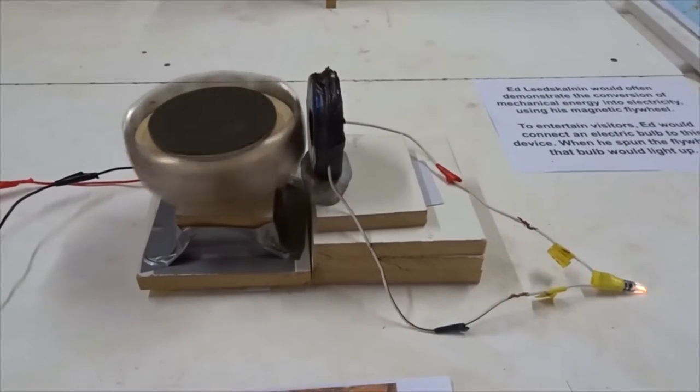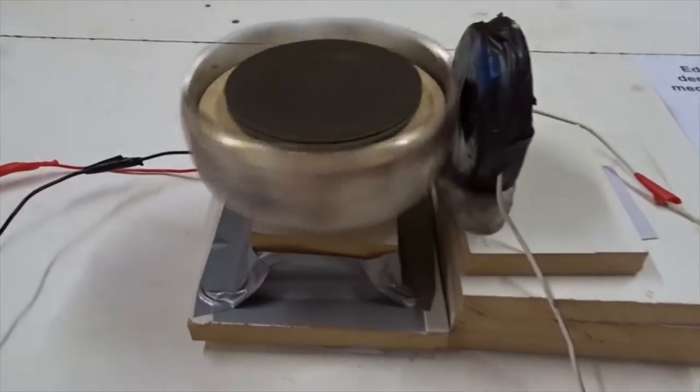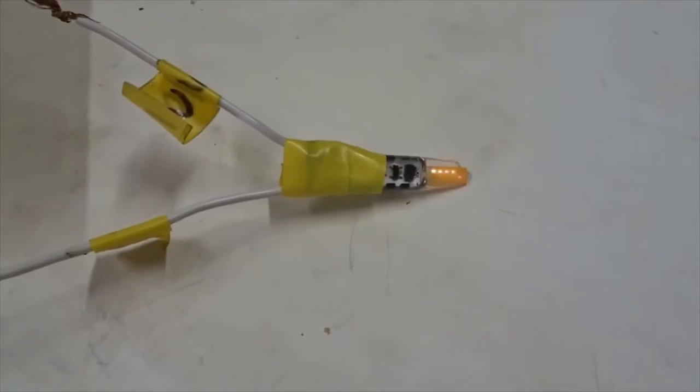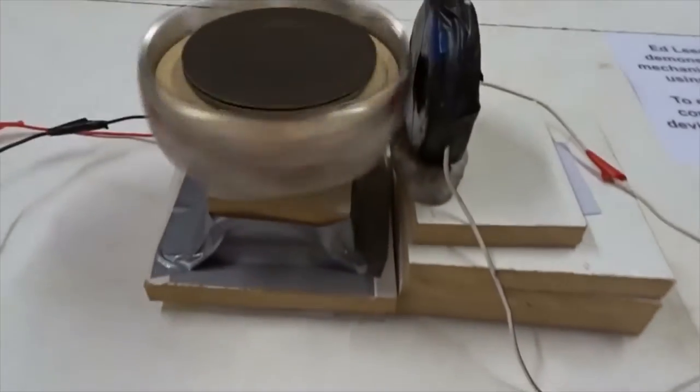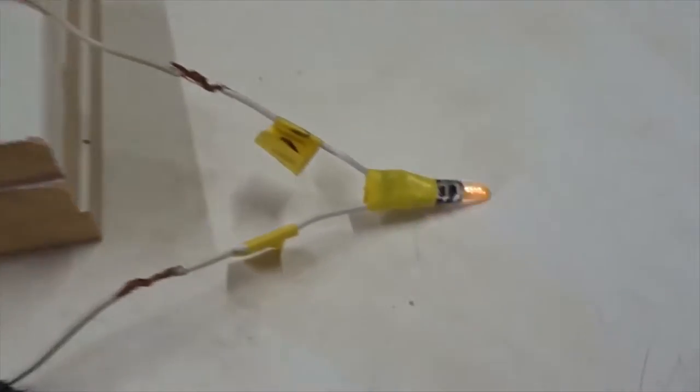This is a small-scale practical model for Ed Leedskalnin's magnetic flywheel, made in the 1930s at Coral Castle. Would you like to learn more? If so, then please watch this video.